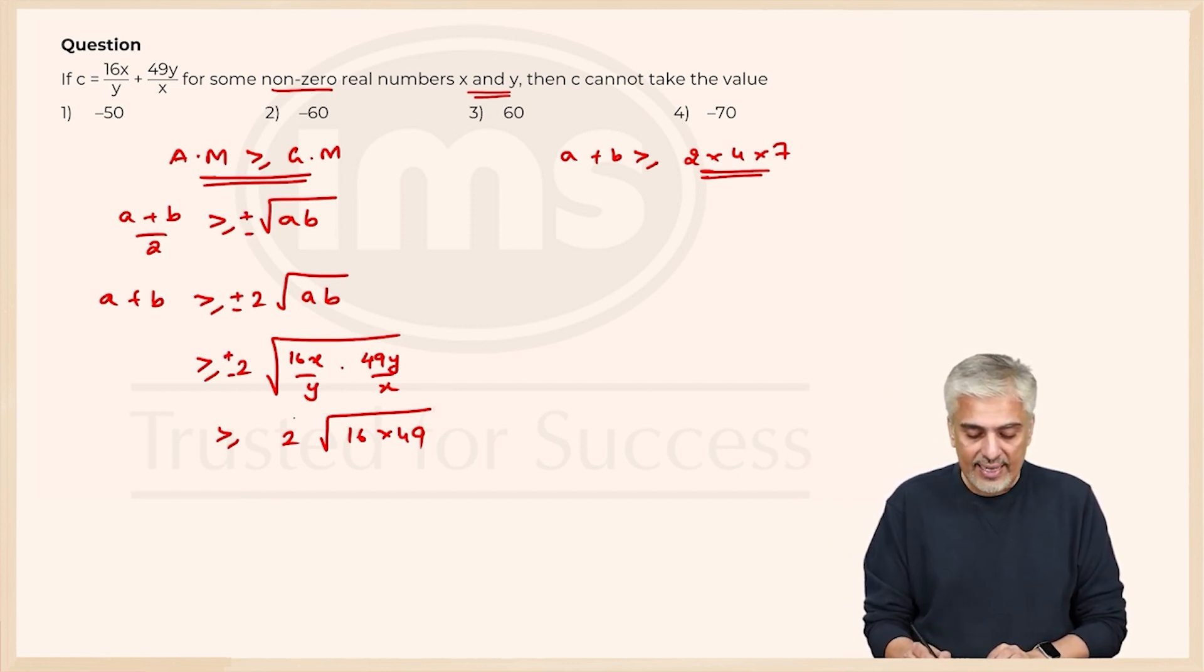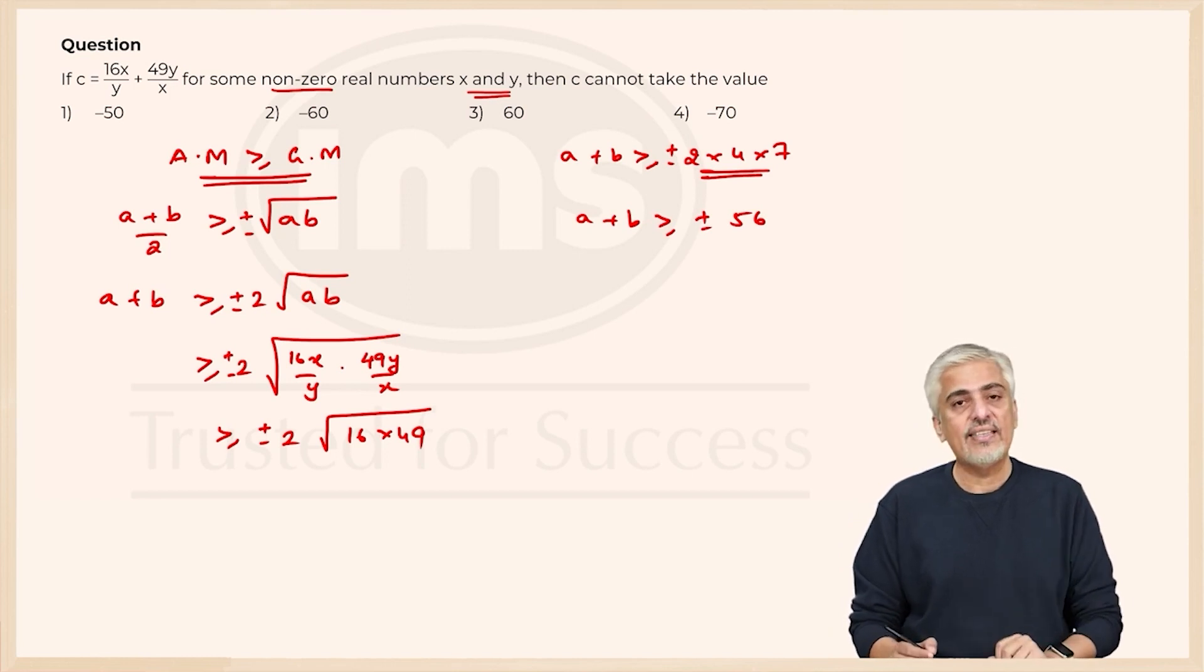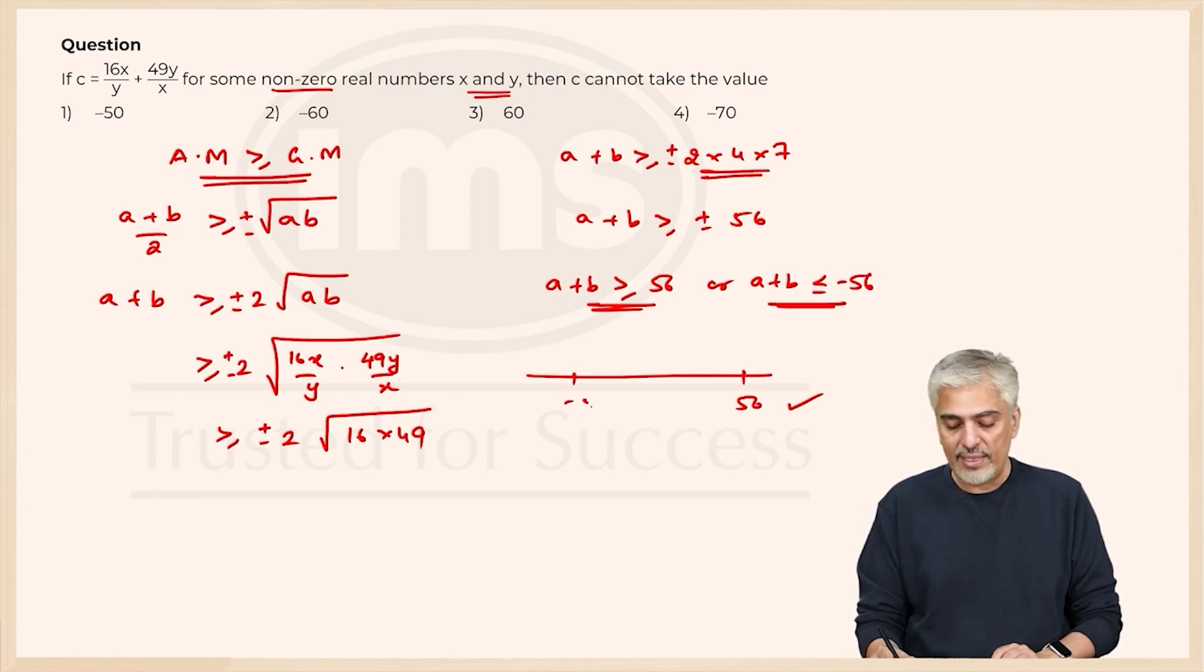And hence I will now get a plus b can be greater than or equal to plus minus 56. So what is the rule we know? When we have greater than inequality, a plus b will be greater than or equal to 56 or a plus b will be less than or equal to minus 56. That means I have an open-ended range: above 56 everything is okay and below minus 56 everything is okay.